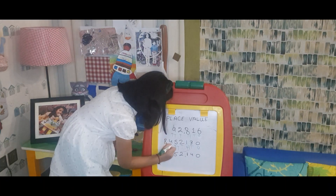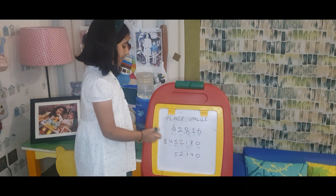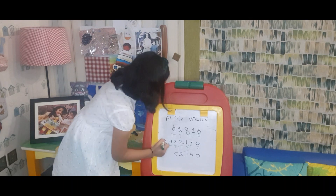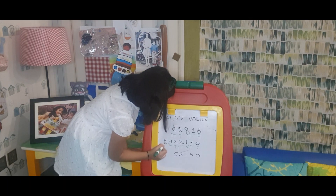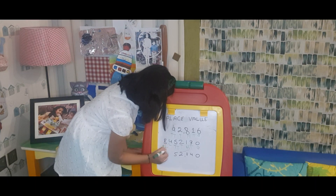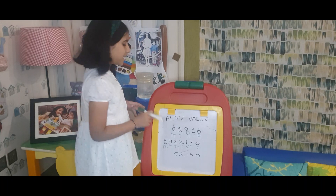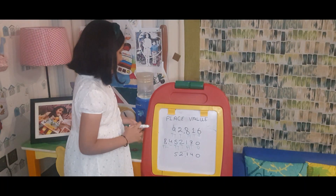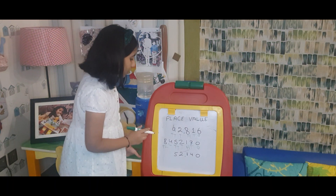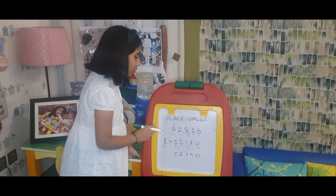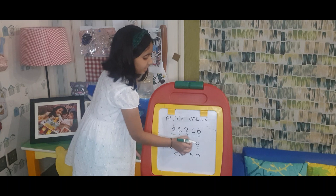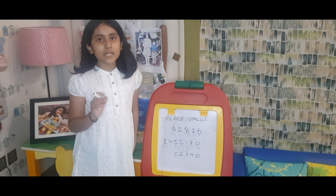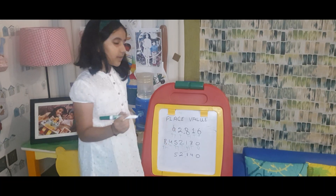Then the digit on the left side of lakh is going to be ten lakh, so I will write a T over there for ten lakh. This number is now completed. The total of this number is 84 lakh 52,130.